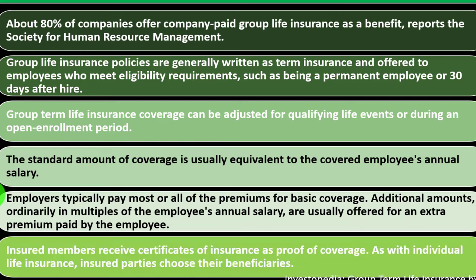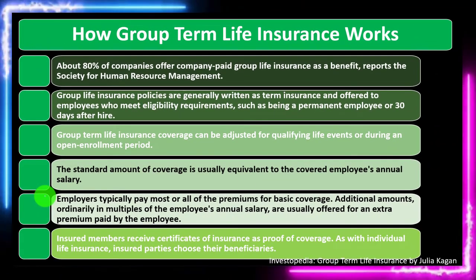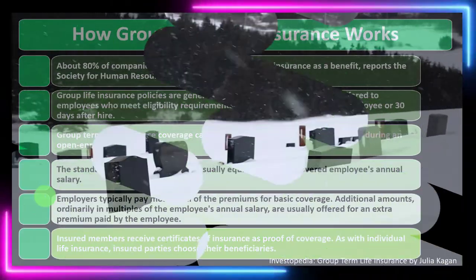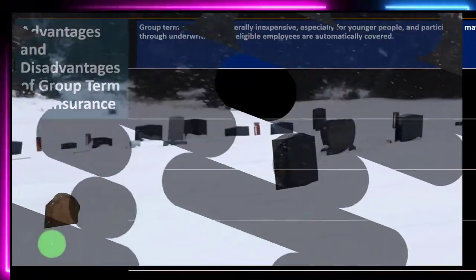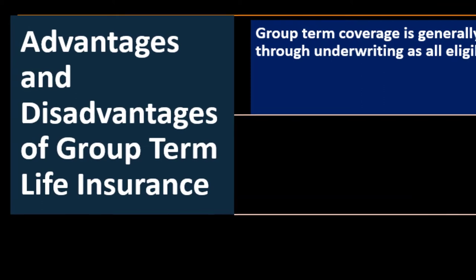Insured members receive certificates of insurance as proof of coverage. As with individual life insurance, insured parties choose their beneficiaries — so in the event of death, the insured designates who will receive the insurance benefit.